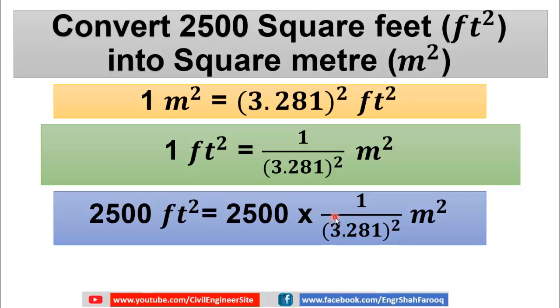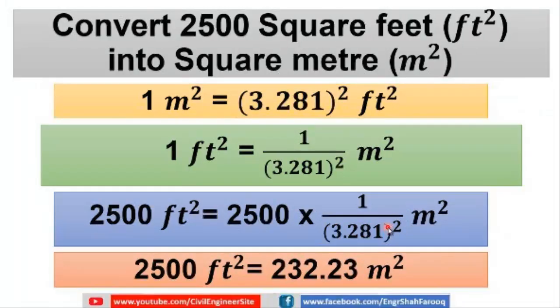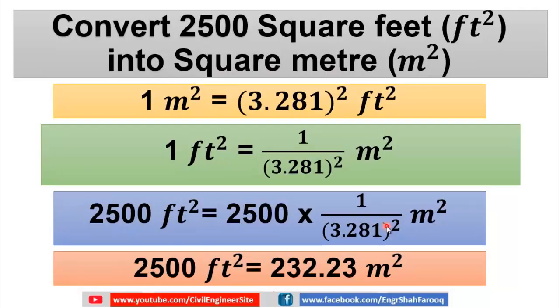By doing simple calculation, we will get 2500 square feet is equal to 232.23 square meter. By applying this simple method, you can convert square meter into square feet and square feet into square meter.